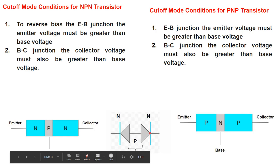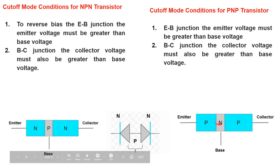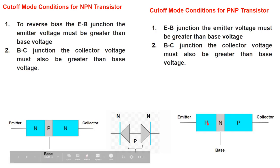If we want to forward bias a diode, what should be the conditions? The negative side should be at low potential and positive side should be at high potential, and the potential difference must be greater than the barrier potential. Now you can understand how we can put this PNP transistor into cutoff mode.